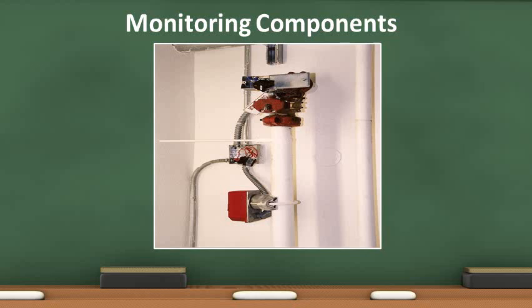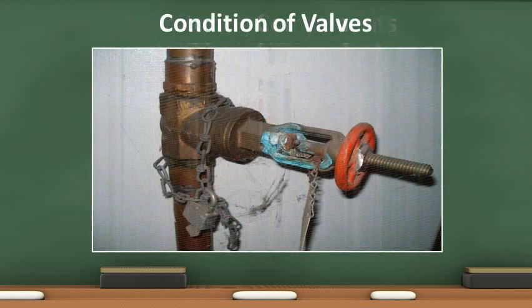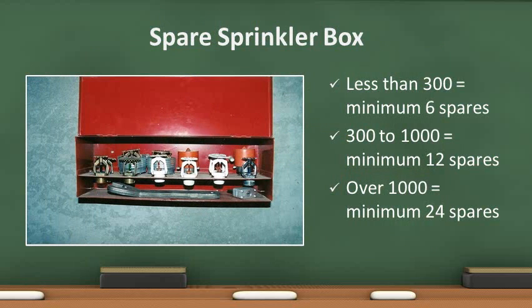Cover plates and conduit are required to ensure the alarm wiring will relay signals to the fire alarm panel. In this photo, the conduit is intact but the cover plates are missing. All valves are to be clean and in good condition. Corrosion may keep this shutoff valve from operating. All sprinkler systems are required to have a box with spare sprinkler heads and a wrench. The sprinklers shall be representative of the sprinkler heads currently in use in the system.